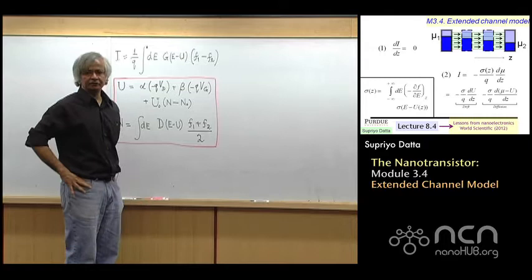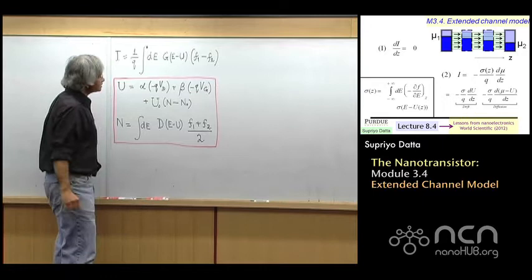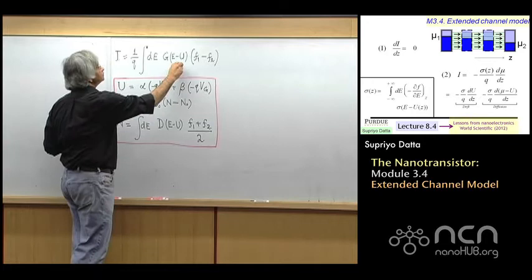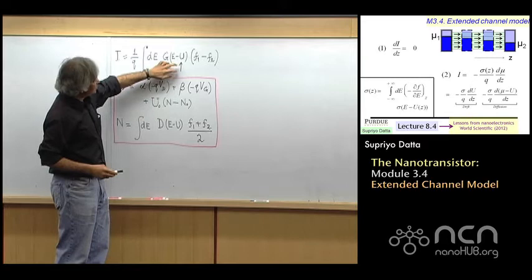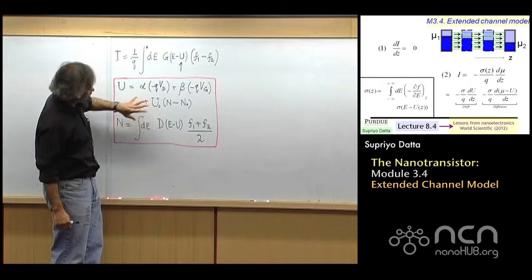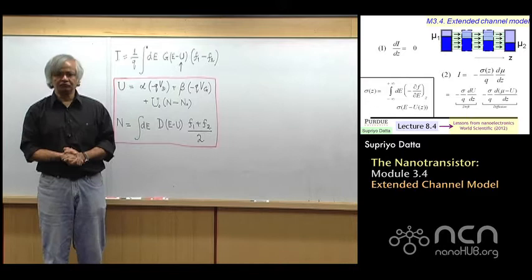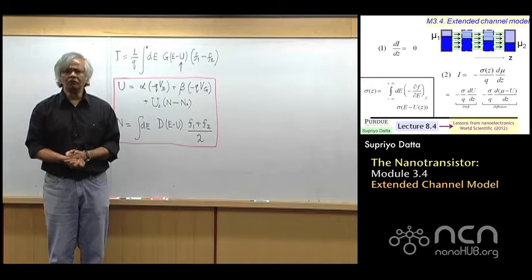What we did in module 3 was we kind of completed the development of what you could call the point channel model. What we showed was that if you take the expression for current that we had earlier in the course but then include this self-consistent potential U — this potential of the channel U — and this U has to be calculated self-consistently from two equations, then you could use this set of equations to provide a reasonably good description of the current-voltage characteristics of small devices.